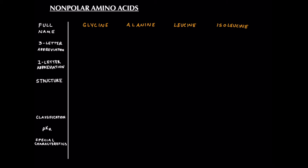Glycine's three-letter abbreviation is simply GLY. Its one-letter abbreviation is also simple — G. And its structure is also simple. All we're going to do is draw our backbone, so we have our N-terminus and a C-terminus, and we're done. If we want to be explicit about the R group of glycine, we can just write in an H, and of course there's also an H that we don't draw. Its classification is nonpolar.